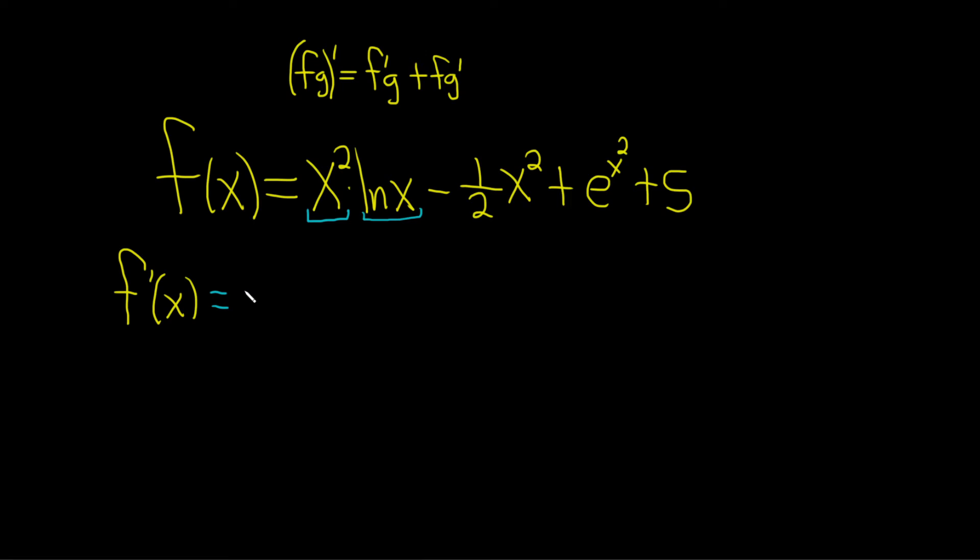So the derivative of x squared is 2x. That's the derivative of the first times the second, so ln(x), plus the first, so just x squared, times the derivative of the natural log of x, which is simply 1 over x.